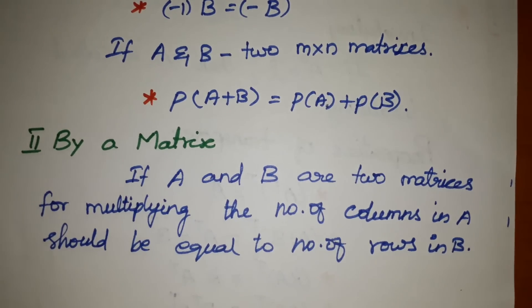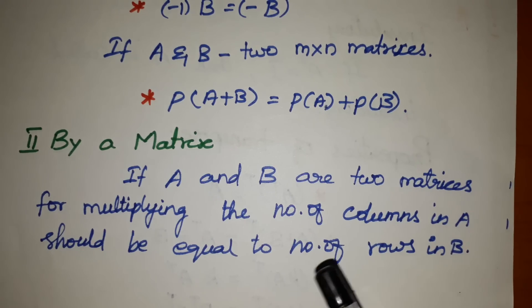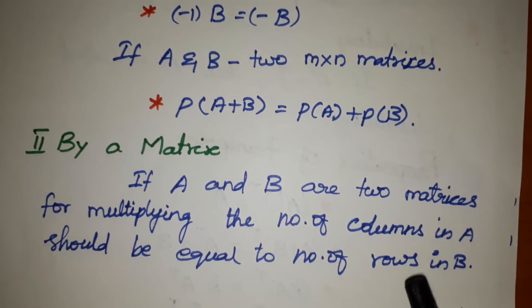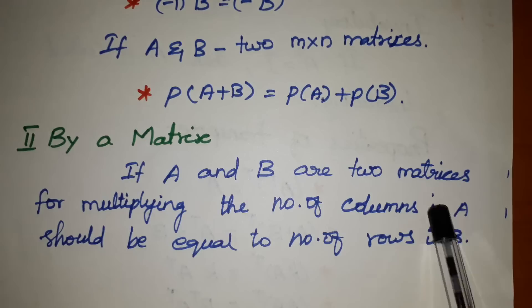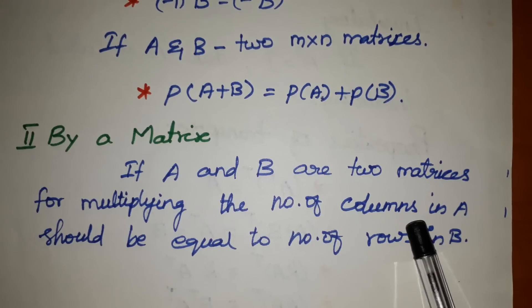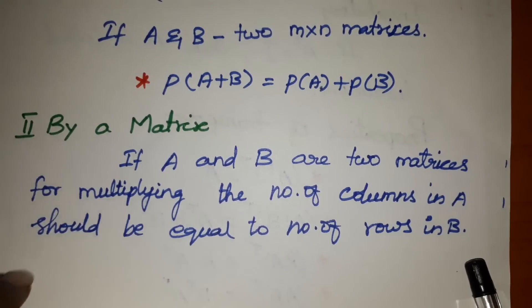For matrix multiplication, there is a common condition. If you multiply matrix A and matrix B, the number of columns of A must equal the number of rows of B. If you satisfy this condition, you can multiply the matrices. This condition is very important. Watch this — the number of columns in A must match the number of rows in B for multiplication to be defined.